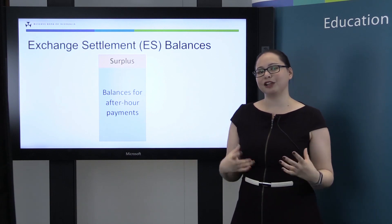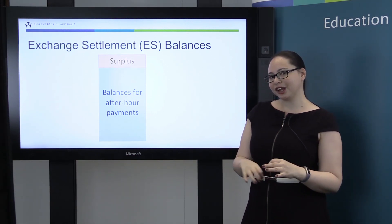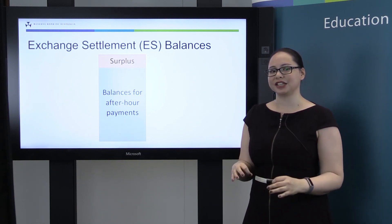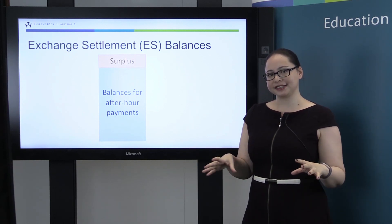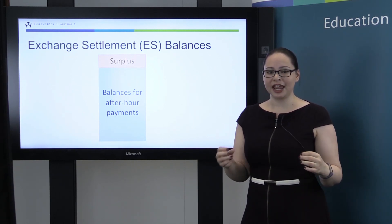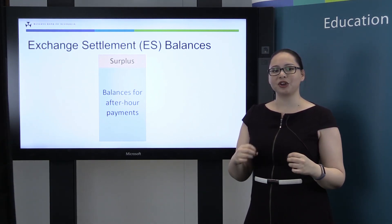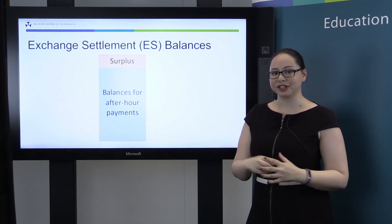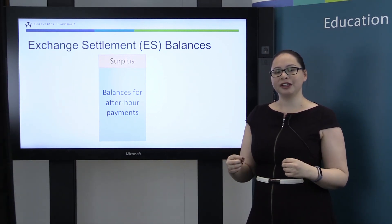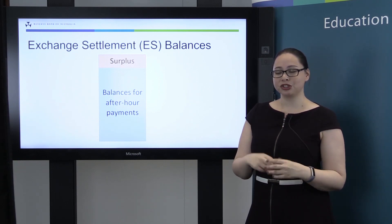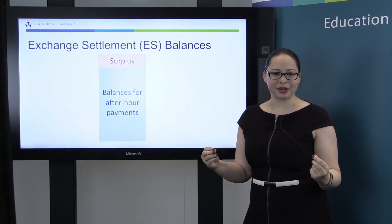I'd just like to clarify exactly what we mean by cash or liquidity in this case. To be very clear, what I'm talking about is actually exchange settlement balances, or ES balances for short. All of the banks and some other financial institutions each have accounts at the Reserve Bank. In these accounts are the Reserve Bank's own electronic currency called exchange settlement balances. These ES balances are really for the banks to make payments between each other — so for example, if Bank A wanted to pay Bank B, they do this through ES balances.